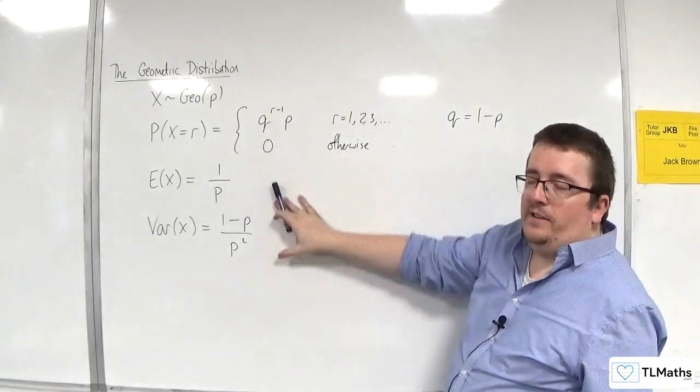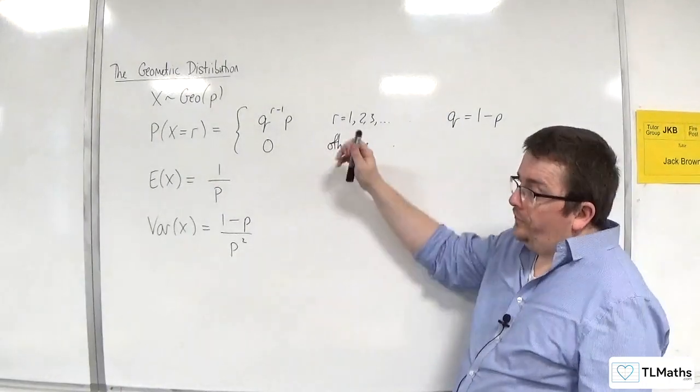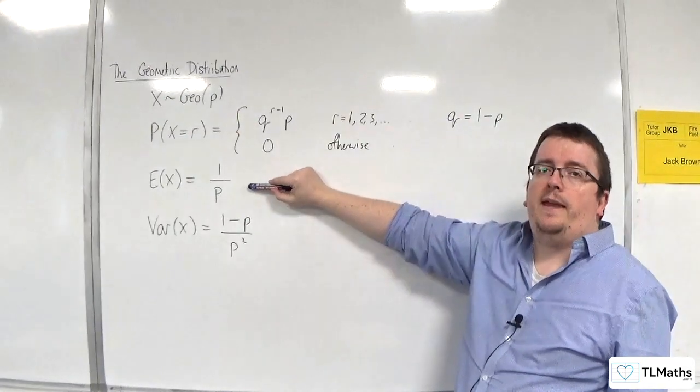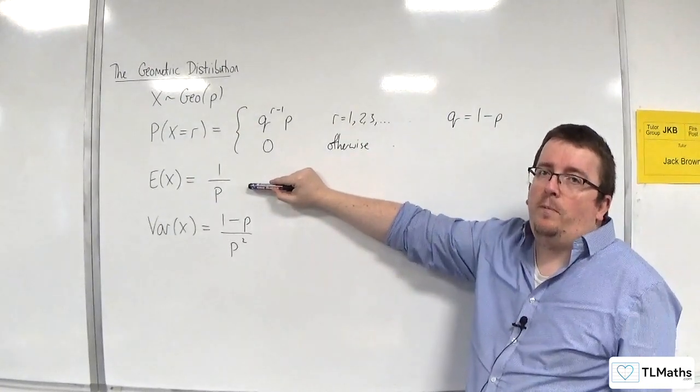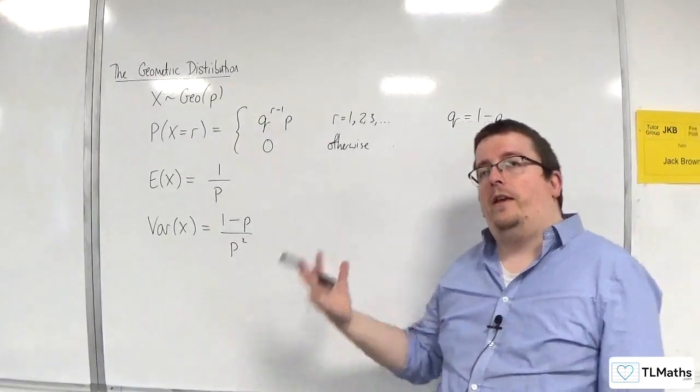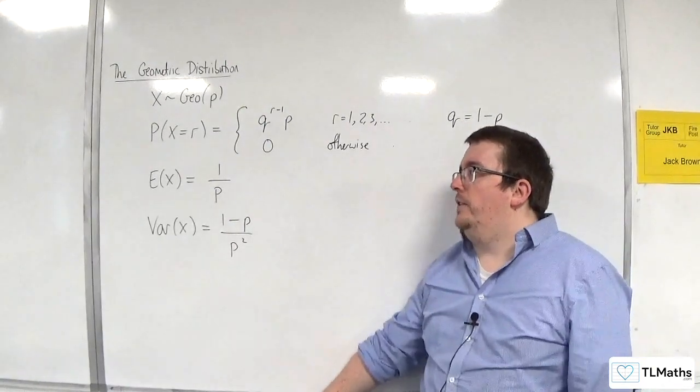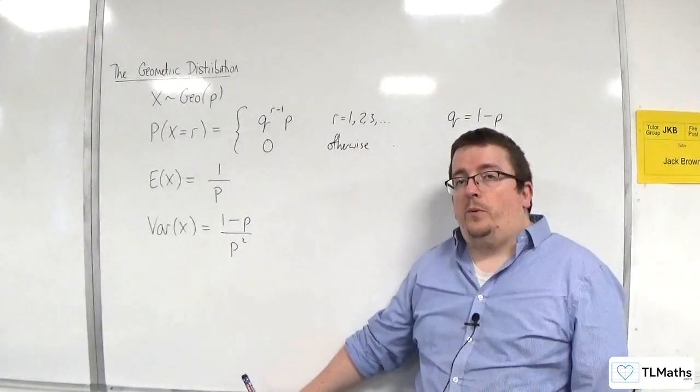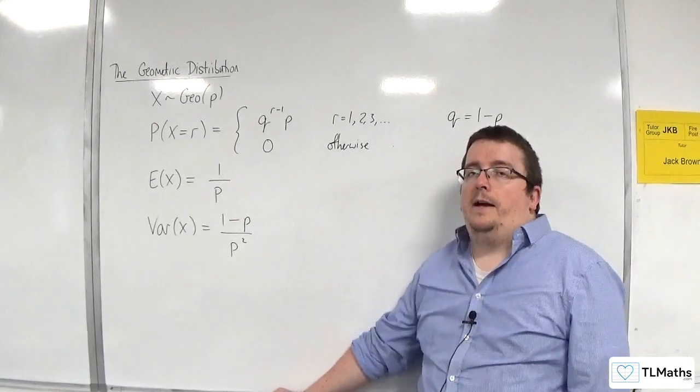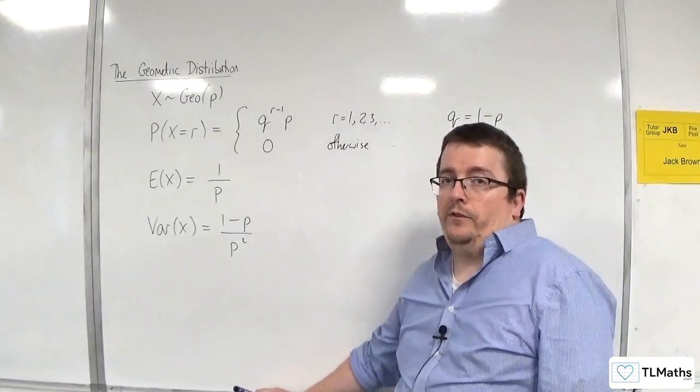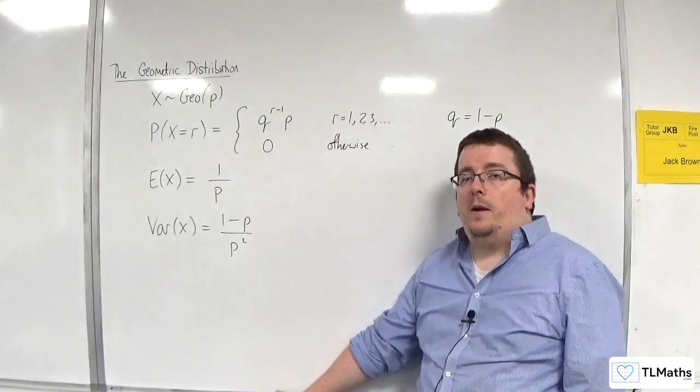You don't need to know the derivations. The derivation for E of X equals 1 over P can be shown probably the easiest way for us as A-level students using the sequences and series material from A-level maths.